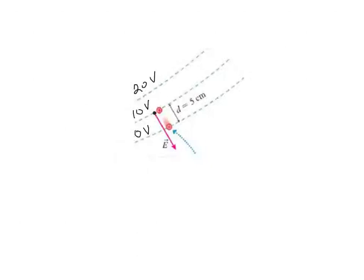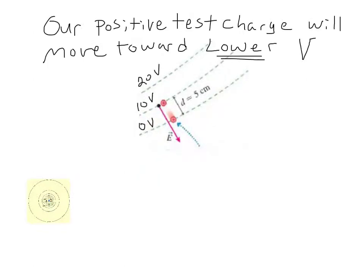Suppose we release our positive test charge from rest. Since our source charge back over here somewhere is a positive charge — we've been using a positive charge as our source charge in all these examples — since both the source charge and the test charge are positive, we know that the test charge will move away because like charges repel. How does the electric potential change as we move away from a positive charge? As we just said, it decreases, as shown here. So this tells us that the positive test charge will move toward lower electric potential. We can think of this as analogous to a mass moving to an area of lower gravitational potential energy — a mass moving downhill. Our charge here is going to move downhill to areas of lower electric potential.